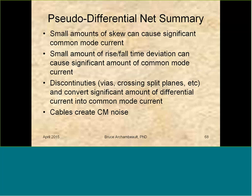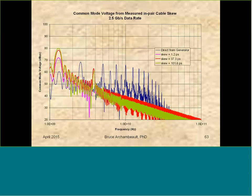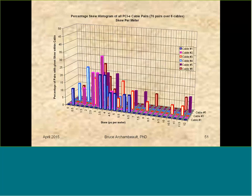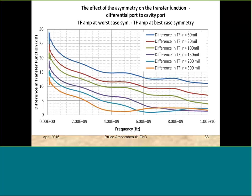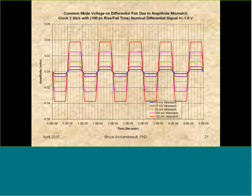Question number two: in reference to slide 22, how is amplitude mismatch produced? Well, that's in the drivers. We've got two complementary single-ended drivers — two totem pole outputs. We're going to drive high with one and low with the other. If the amplitude is mismatched — instead of going from zero to one volt and one volt to zero, it goes from one volt to zero and zero to 0.95 volts — that's the mismatch I'm talking about. And that's very common, actually.